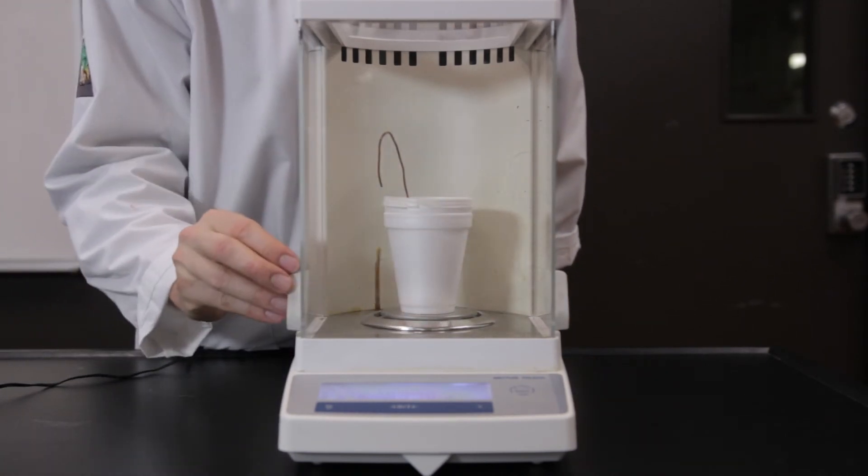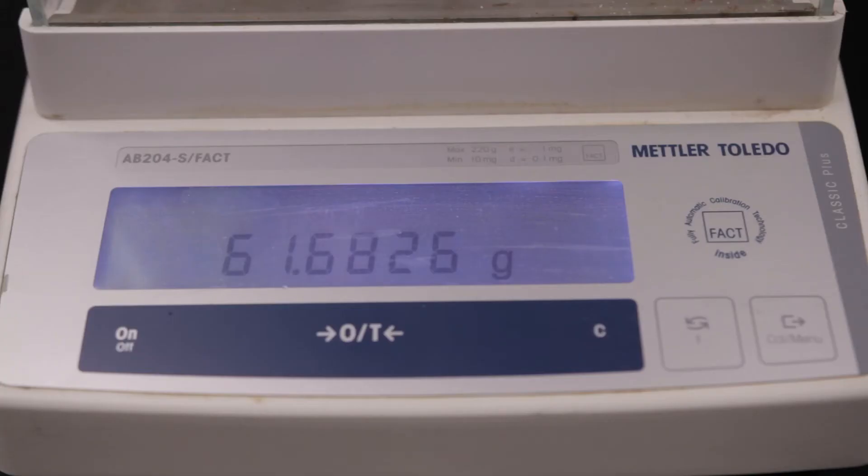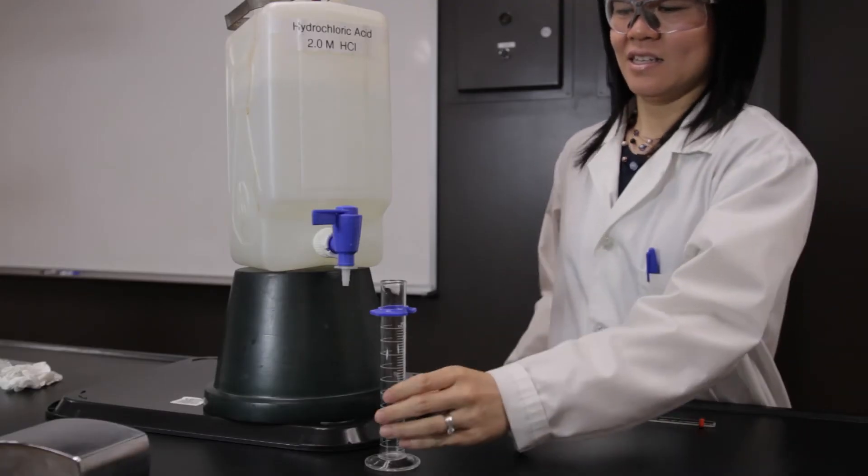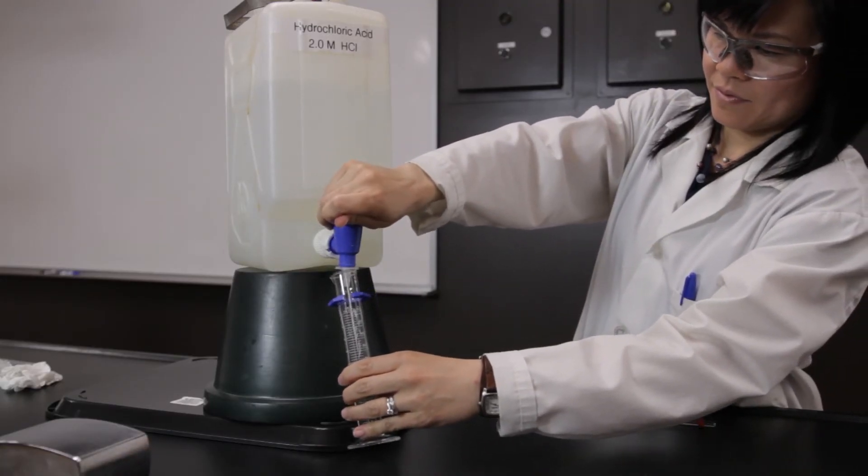Record the exact mass. Do not discard the contents of the calorimeter as it will be used in part 2. Obtain 50 milliliters of hydrochloric acid solution using a graduated cylinder.